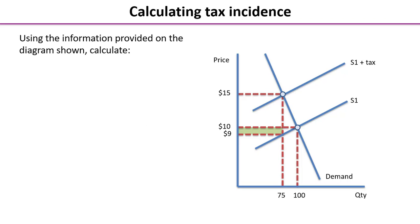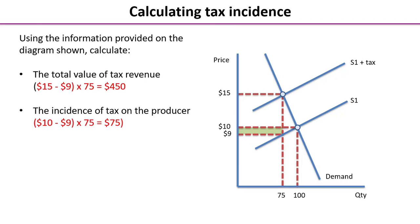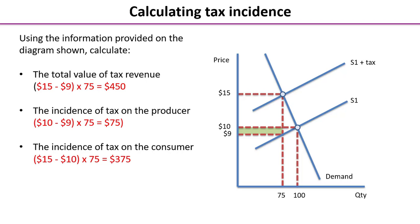Let's take a look at the answers. The first question asked you to calculate the total value of tax revenue: it's the difference between $15 and $9 — that's the tax per unit — then multiply by 75, which is the total number of units sold after the tax has been imposed, giving you $450. The second one, the incidence of tax on the producer — the green shaded area at the bottom — is $10 minus $9, so just $1 multiplied by 75, which gives you $75.